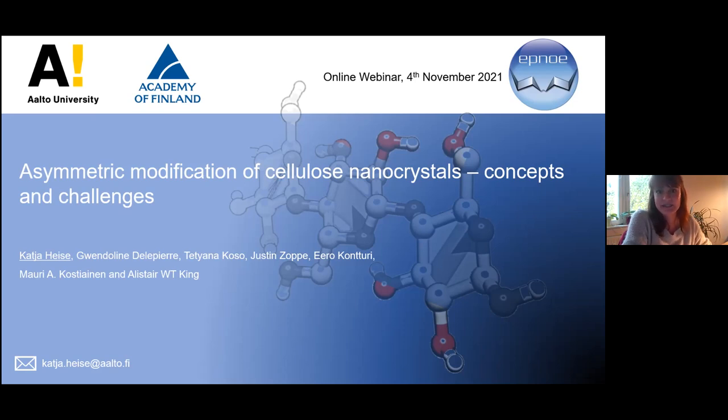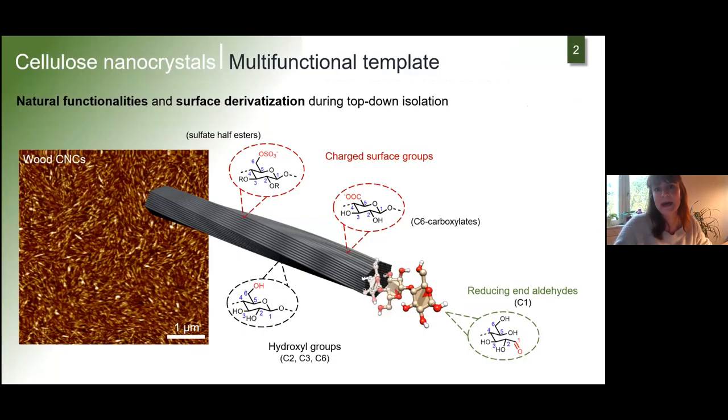If you think about cellulose nanocrystals, we have a multifunctional template with natural functionalities like surface OH groups and reducing end group aldehydes. When we isolate cellulose nanocrystals by sulfate ester hydrolysis, we introduce sulfate half esters to the surface which are responsible for colloidal properties.